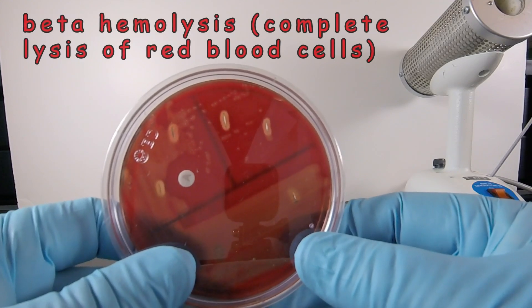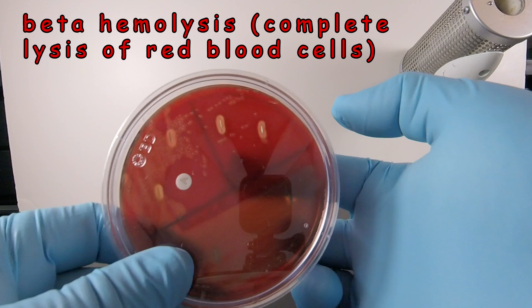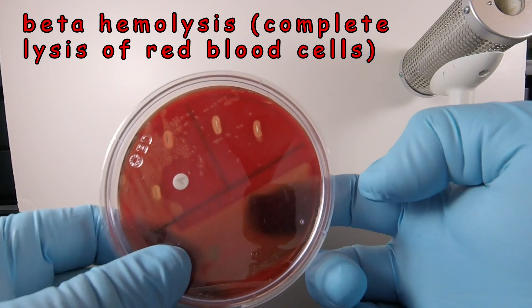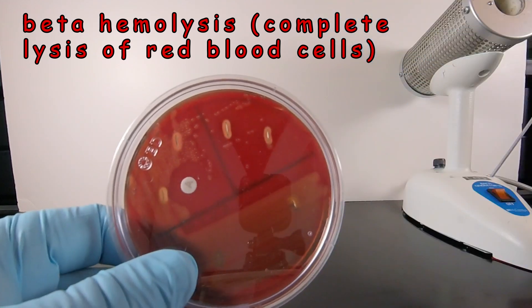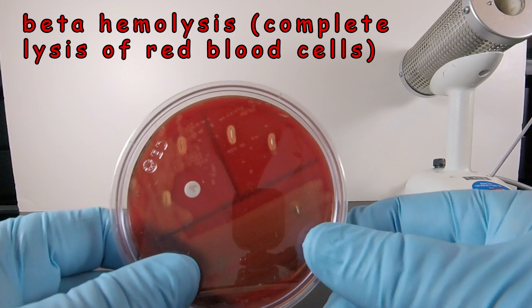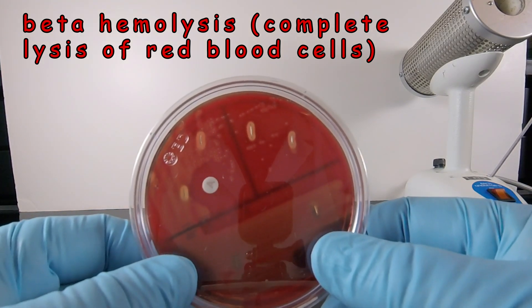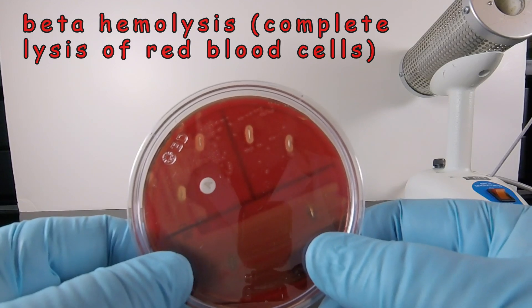We see beta-hemolysis. You can see the beta-hemolysis around the individual colonies, around the solid growth, but especially where the agar was stabbed, where both the hemolysins are functioning and lysing the red blood cells. This is a complete lysis of the red blood cells in the agar, which we call beta-hemolysis.